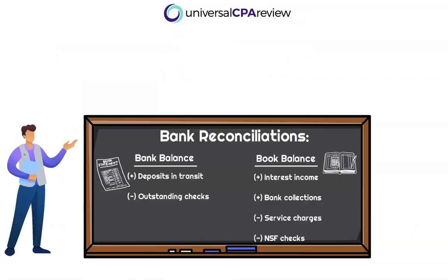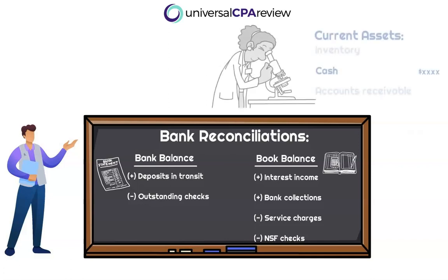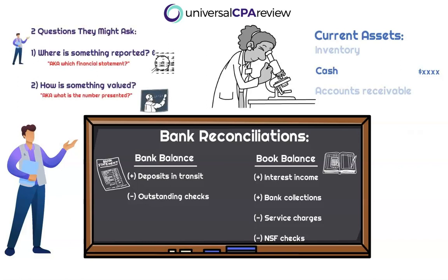So let's dive into it. Arguably the most important topic when it comes to the cash section of this exam — remember, we're taking each line item within the financial statements and dissecting it. We want to understand where something is being reported and how something is being valued. When it comes to the cash line item, this current asset within the balance sheet, we might see a discrepancy between what is being reported in the books — the financial statements — and what is being reported in the bank statements.